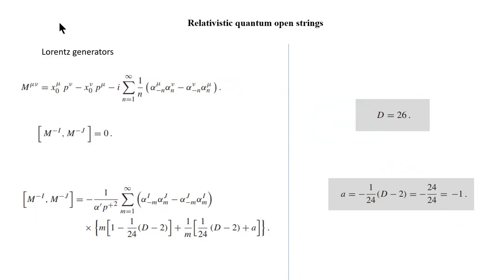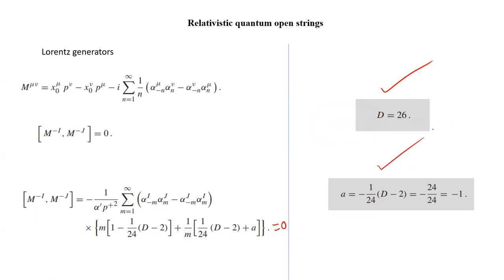For Lorentz symmetry to exist in the theory, the Lorentz operators must commute. Here you can see the commutator bracket with respect to transverse coordinates i and j. If these Lorentz generators must commute, then the commutator must be set equal to zero. This commutator is evaluated and this answer must be zero. It is equal to zero only when two conditions are satisfied: a equals minus one and d equals 26.